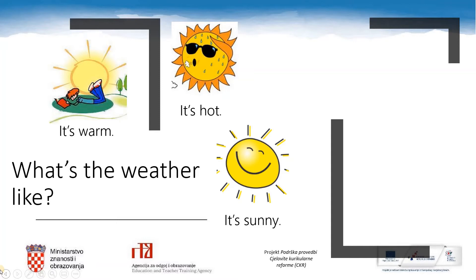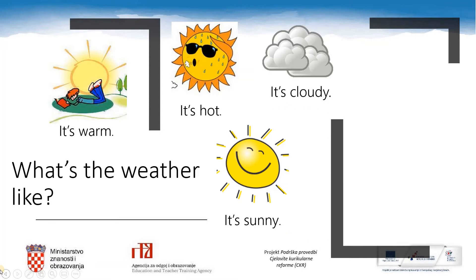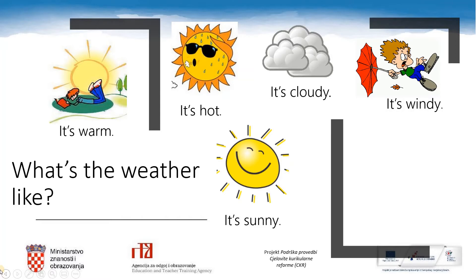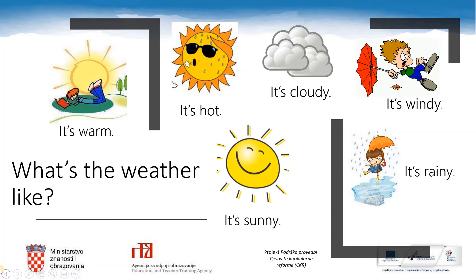But take a look at this picture. What's the weather like here? It's cloudy. What's the weather like here? It's windy. What's the weather like? It's rainy. As you can see, the weather in summer can be cloudy, windy or rainy too.